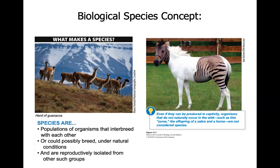The other thing that's really important related to the biological species concept is that they have to be able to produce viable offspring. A mule is the cross between a male donkey and a female horse, and mules are sterile — you can't breed two mules together and get more mules. So part of this biological species concept is not only can they interbreed with one another, but can they also produce children that can have children? If their genetic line stops with the zorse or the mule, they're considered two separate species.